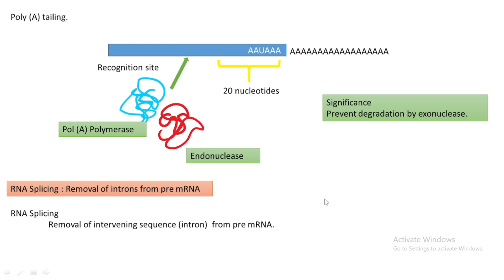Good morning, dear students. Today we are going to continue the remaining portion of the chapter on transcription. In the last class, we finished about the modification happening to a mature mRNA — the mRNA that is just transcribed from the DNA. In this section, we are going to see RNA splicing, specifically mRNA splicing.